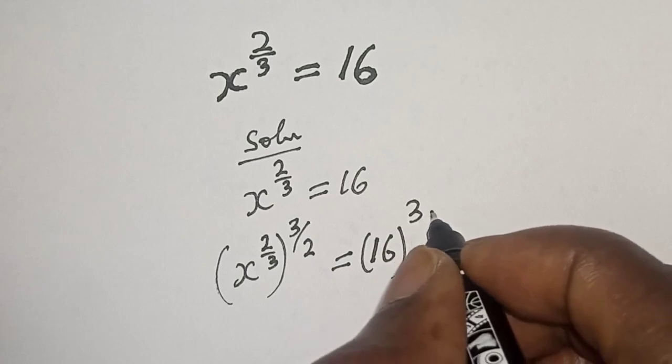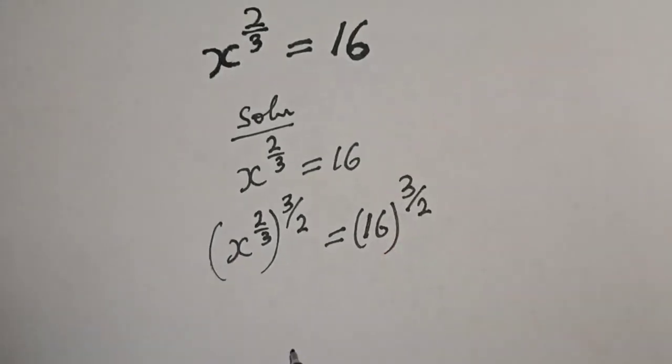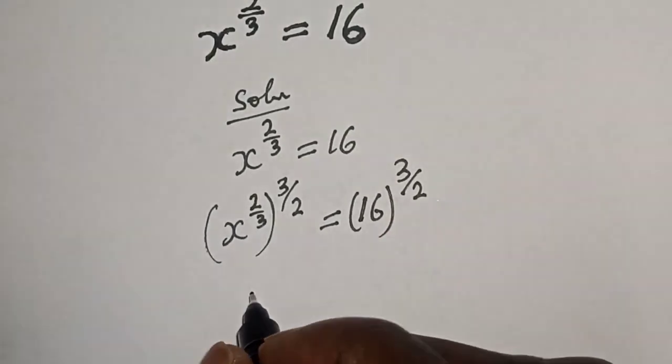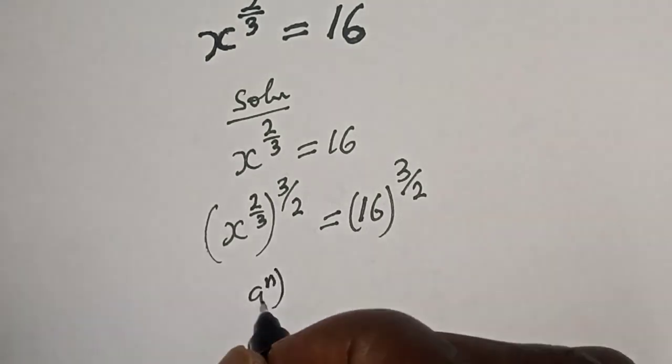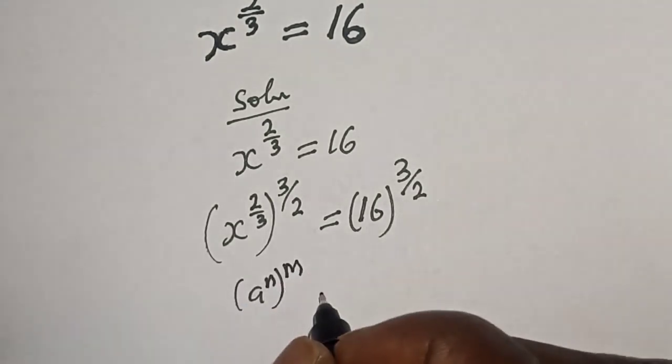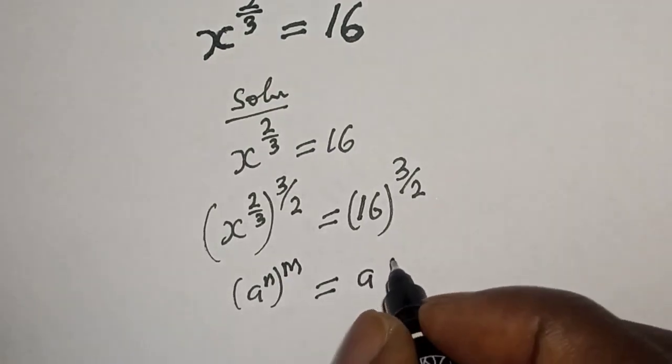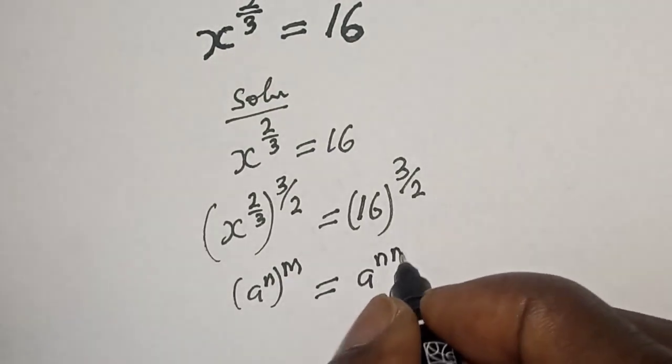If you have a raised to power n to the power of m, it is equal to a raised to power n times m.